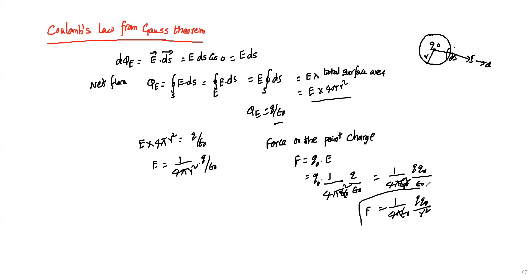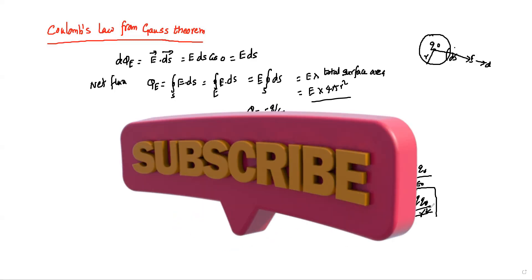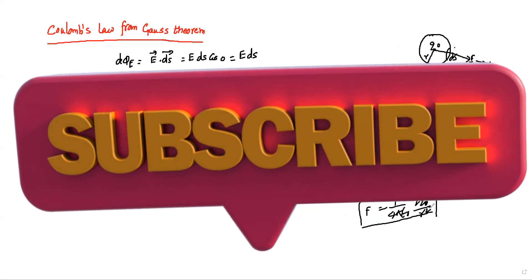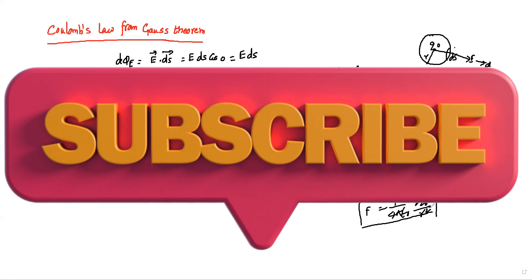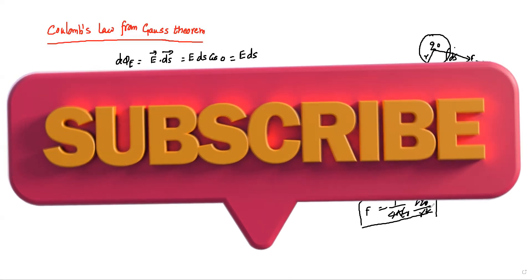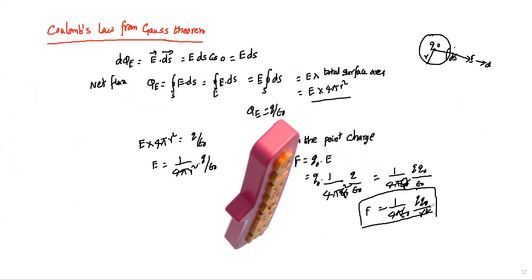So we have derived Coulomb's law from Gauss theorem. Hope you understood this concept. Please comment if you have any doubts or related numericals. Thank you so much.